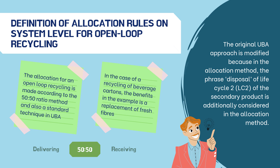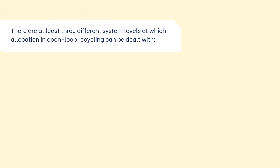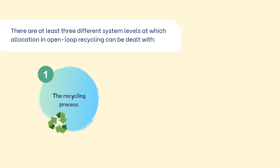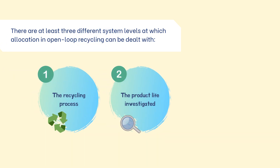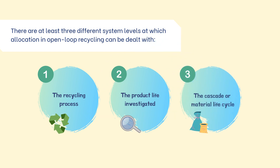Actually, there are at least three different system levels at which allocation in open loop recycling can be dealt with: the first is the recycling process, the second is the product life investigated, and the last is the cascade or material life cycle.